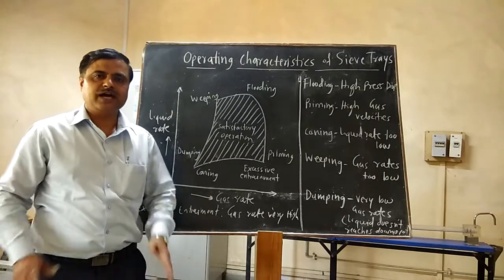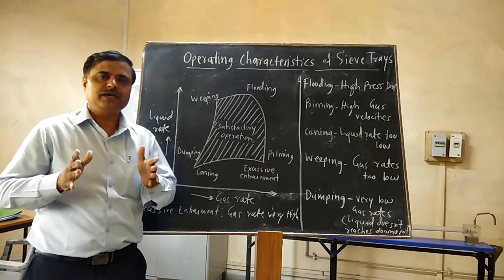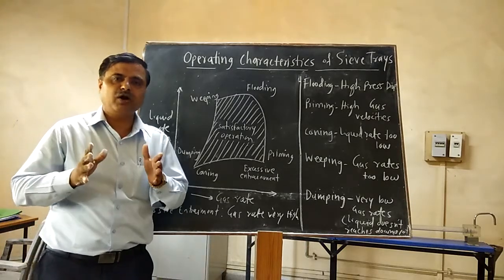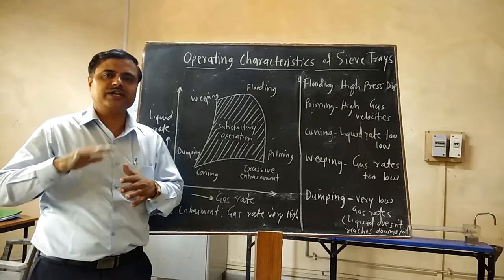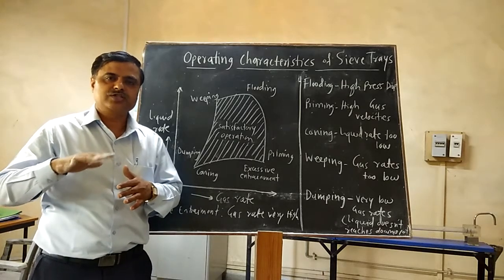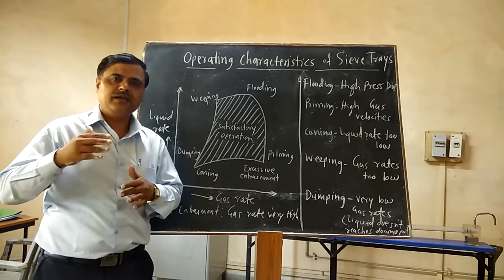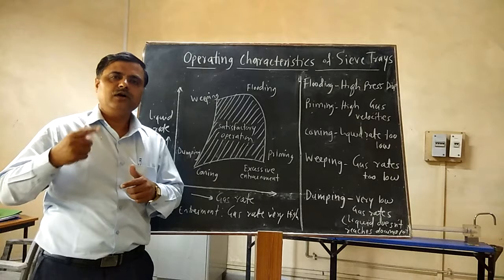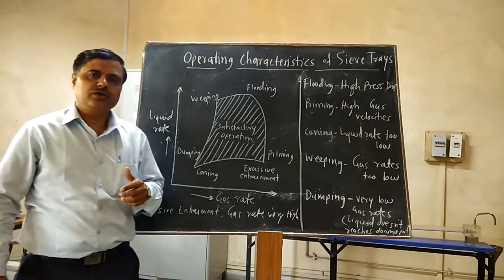In the sieve tray column, the main body of the sieve tray column is called the shell. Inside the body of the sieve tray column, there are different sieve trays provided. The construction of the sieve tray includes perforated trays, a downcomer arrangement, and a weir arrangement.